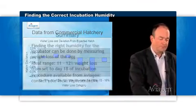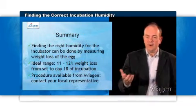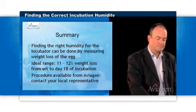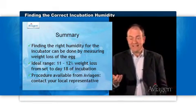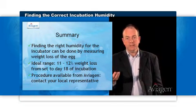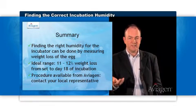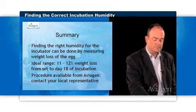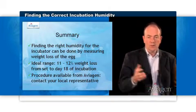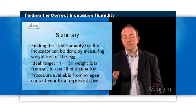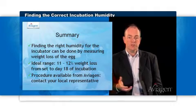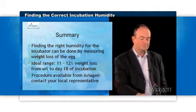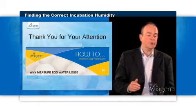In summary, we can find the right humidity for our incubator by measuring egg weight loss. Ideally, eggs should be losing between 11 to 12 percent of their fresh egg weight by day 18 of incubation. We have written a procedure for measuring egg weight loss, which you can obtain from your Avigen representative. Thank you for your attention.